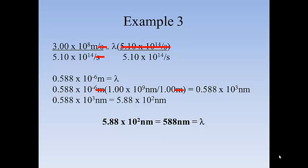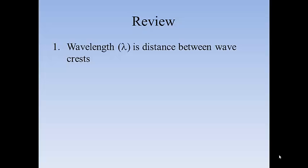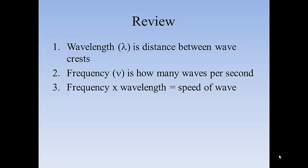So in review, for any set of waves, the wavelength is the distance between the top of each wave. The frequency is how many waves per second pass a reference point. For any wave, the speed of the wave is equal to the frequency times the wavelength. For electromagnetic radiation, the speed of the wave is a constant, which has been measured at 3.00 times 10 to the 8th meters per second.